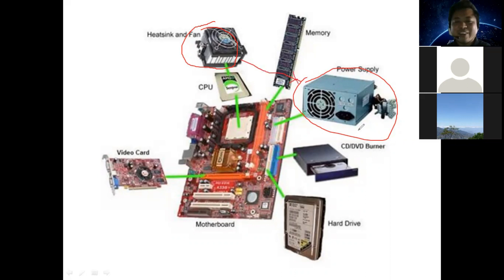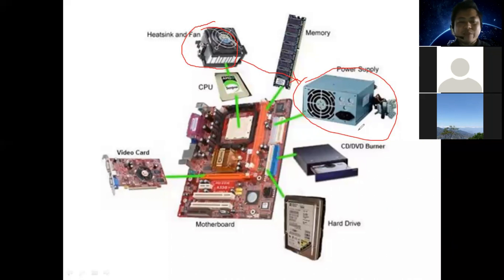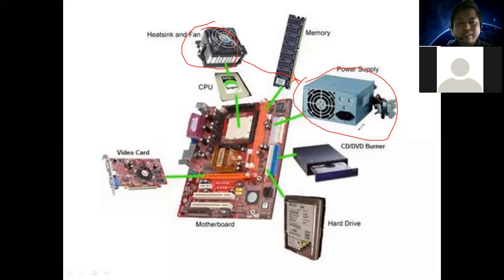Basically, we use AC to keep systems cool. There is a processor inside ATM machines, and AC is used to keep the temperature low so the functions don't slow down. This is an amazing fact — ATMs and servers use AC for cooling.